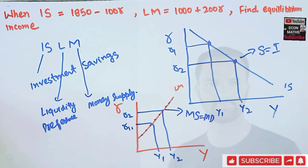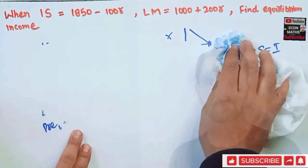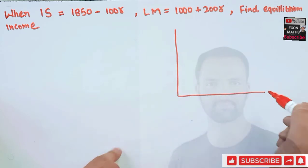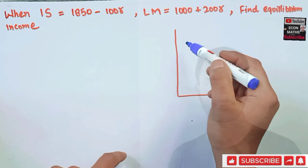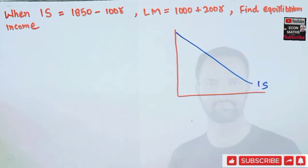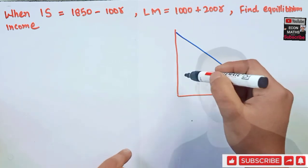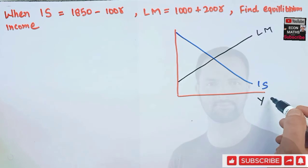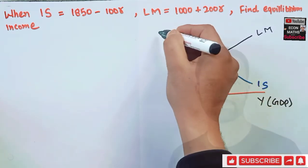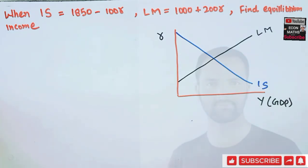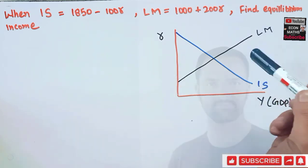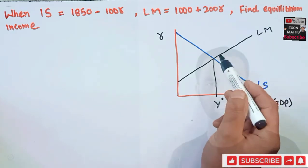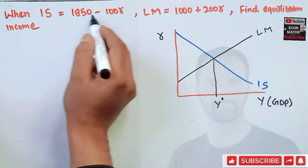So the LM curve shows different combinations of rate of interest and level of income where money supply equals money demand. Now let's solve our question. We have a graph with the IS function having a negative slope and the LM function having a positive slope. On one axis we have GDP and on the other we have the rate of interest. The IS-LM equilibrium income is achieved when the IS and LM curves intersect.